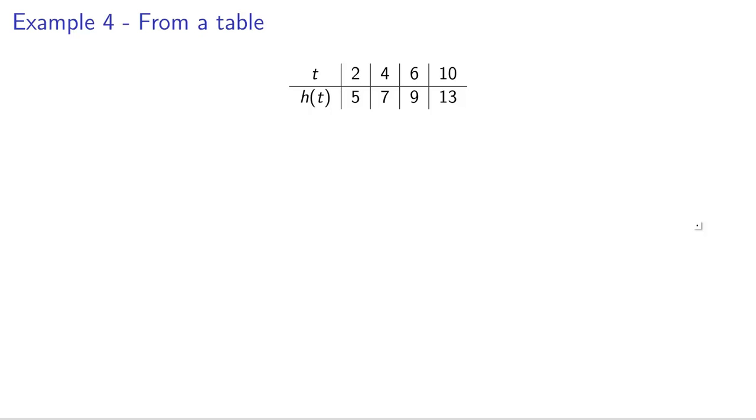For this problem, I'm just going to tell you that this table is from a linear function. There's another video where you can verify that the average rate of change stays constant through these points. Once I tell you this is a linear function, I want you to find the equation for it. What's the first thing we always want to find? We always want to look for slope. How would we find slope from here?